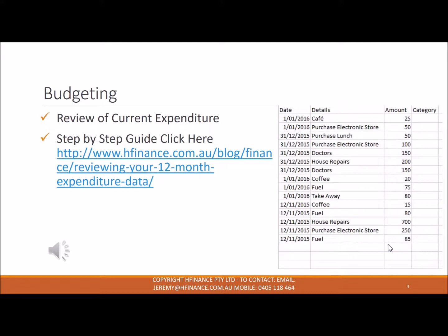Our first step is to log into your banking online platform and download your transaction history. Go into your credit cards and your savings accounts and download those files for the last 12 months as a CSV, which is a type of Excel format.